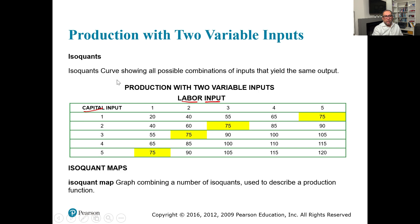Now, what is the isoquant curve? The isoquant curve shows all possible combinations of inputs that yield the same output. That's why we highlighted these combinations in yellow. When using one labor and five capital, the output is 75. Similarly, two labor and three capital gives 75, three labor and two capital gives 75, and five labor and one capital also gives 75. When we get a curve with these combinations of labor and capital, we get an isoquant.